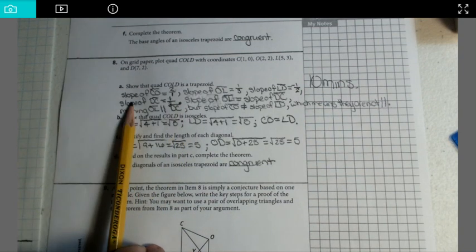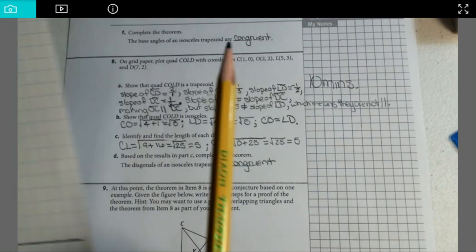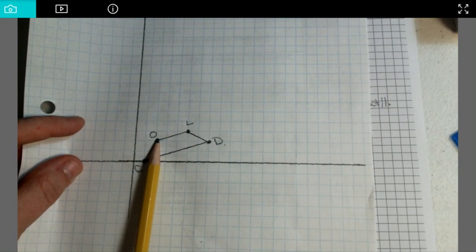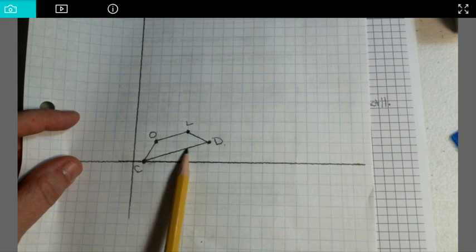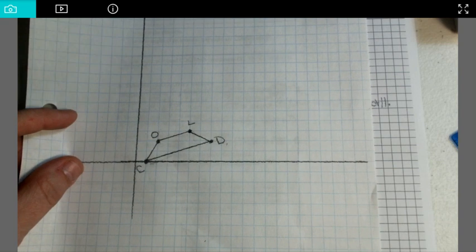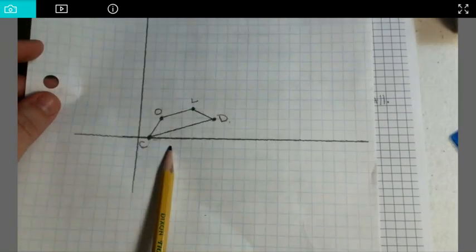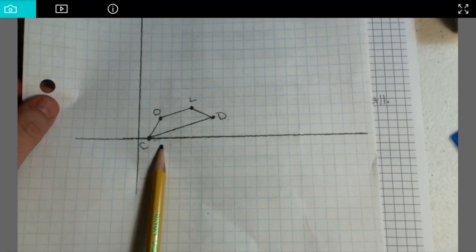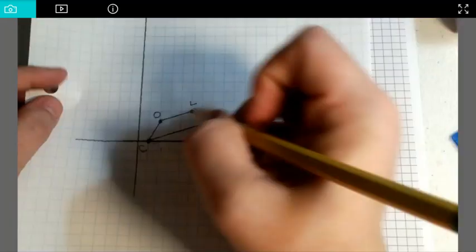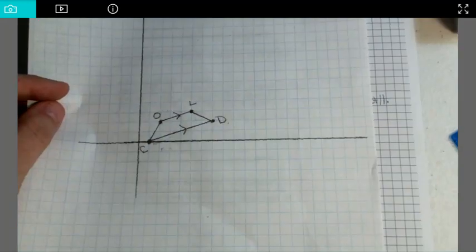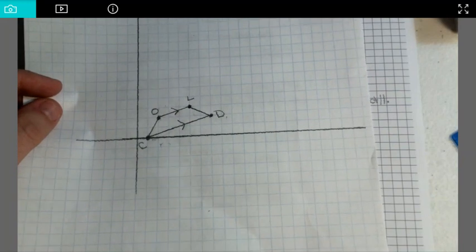So I first found the slope of all four sides. This had a slope of 2. This had a slope of 1 third. This had a slope of 1 third. And this had a slope of negative 1 over 2. So since OL and CD had the same slope, that means that these two lines are parallel to one another. And we can note that by making a little arrow to indicate that those two lines are going in the same direction.